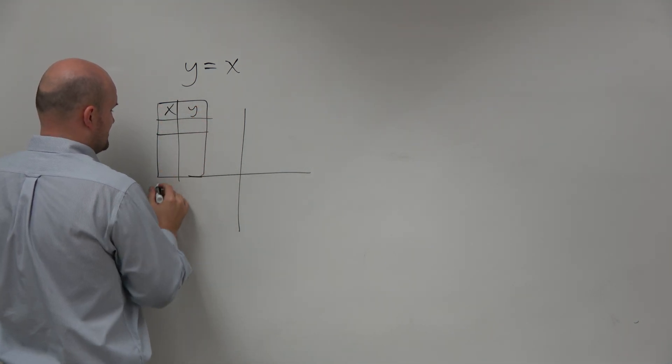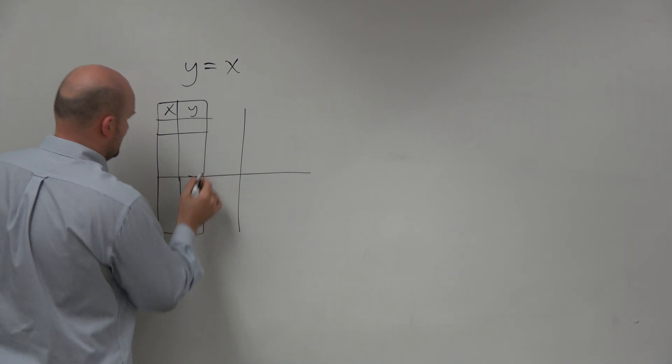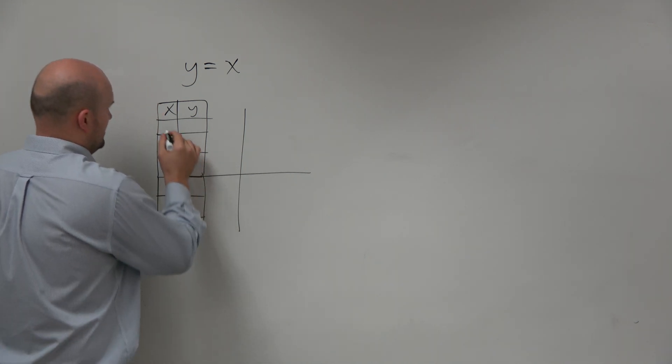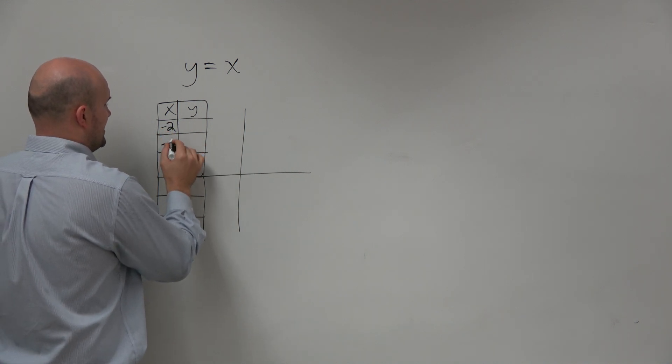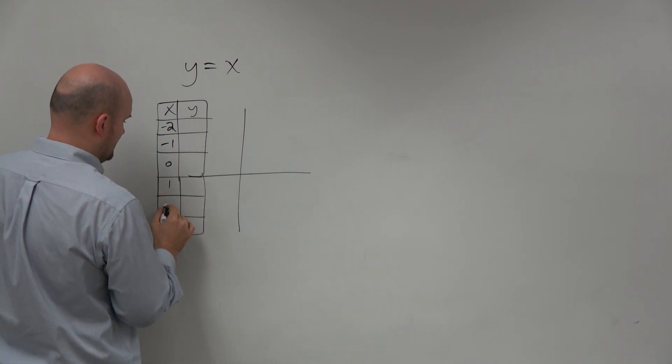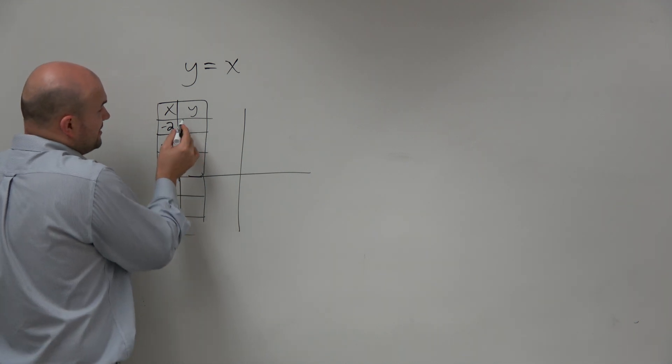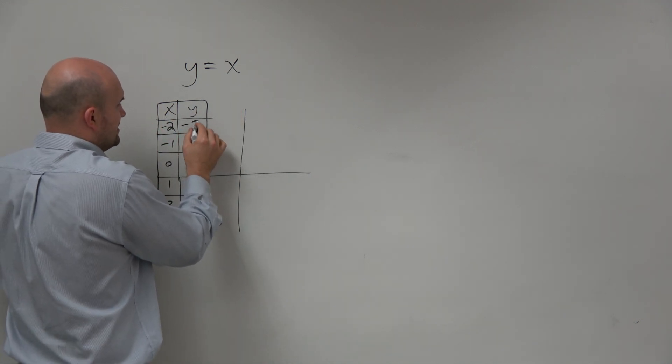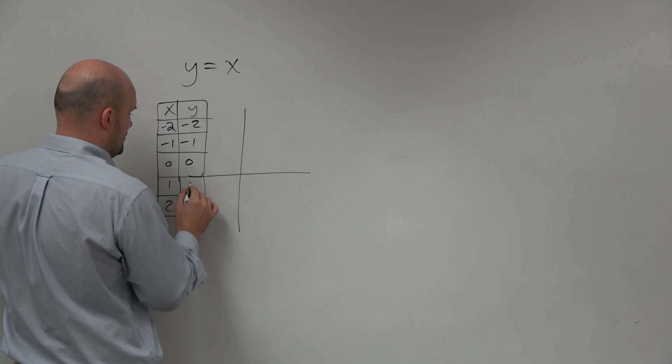If we just pick some random numbers here, let's pick negative 2, negative 1, 0, 1, and 2. We notice that whatever x is, that's what y is. So that's negative 2, negative 1, 0, 1, and 2.